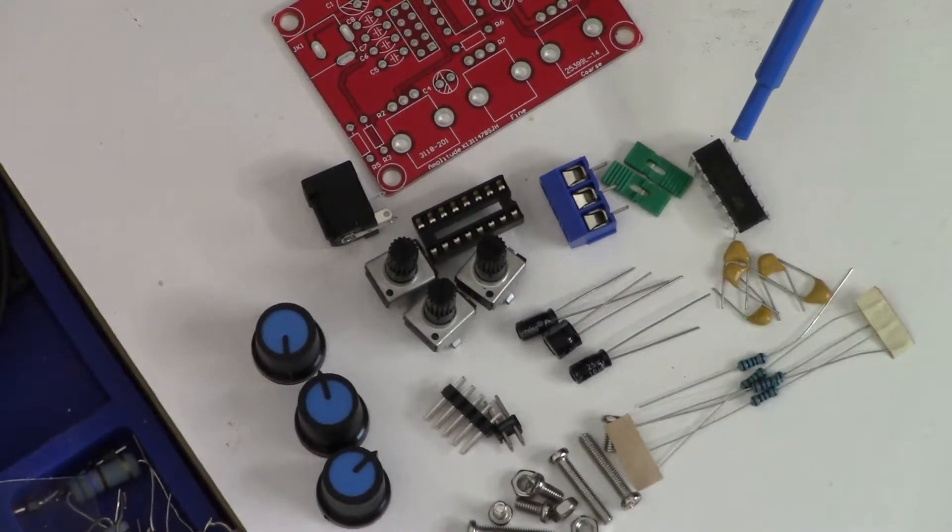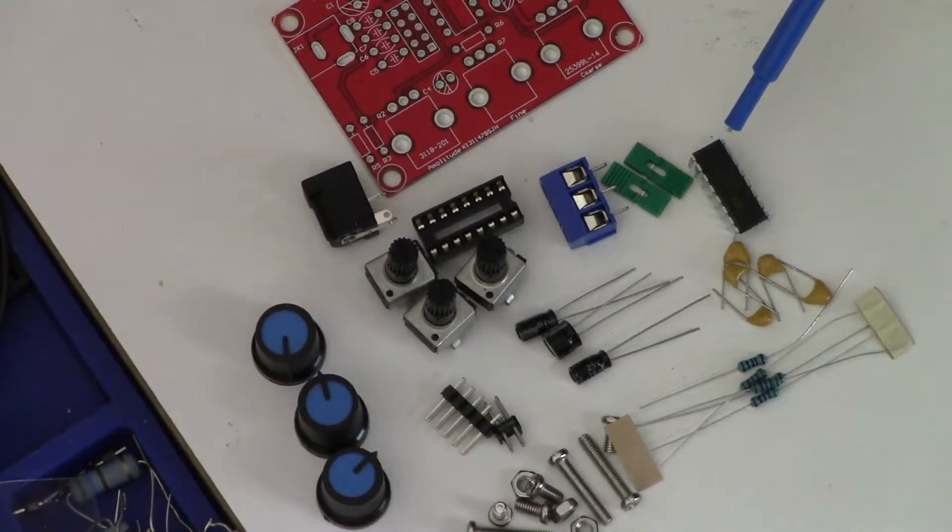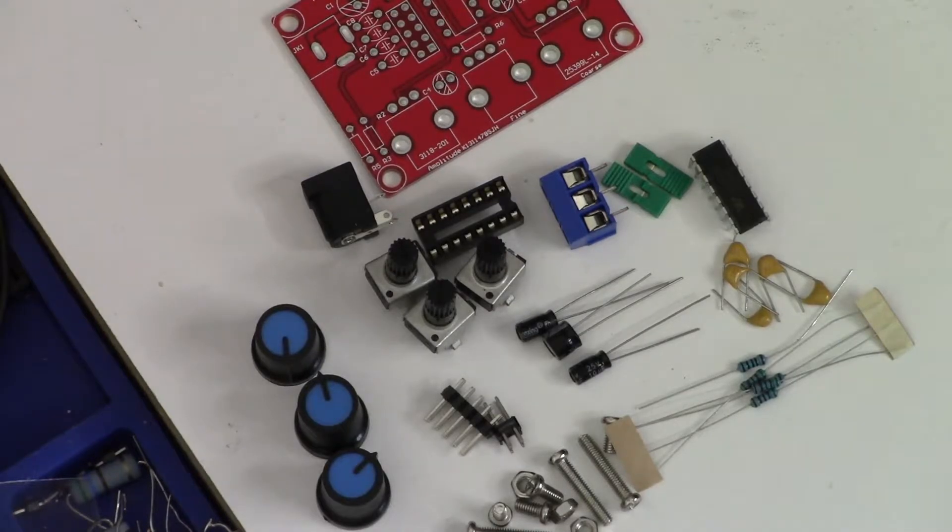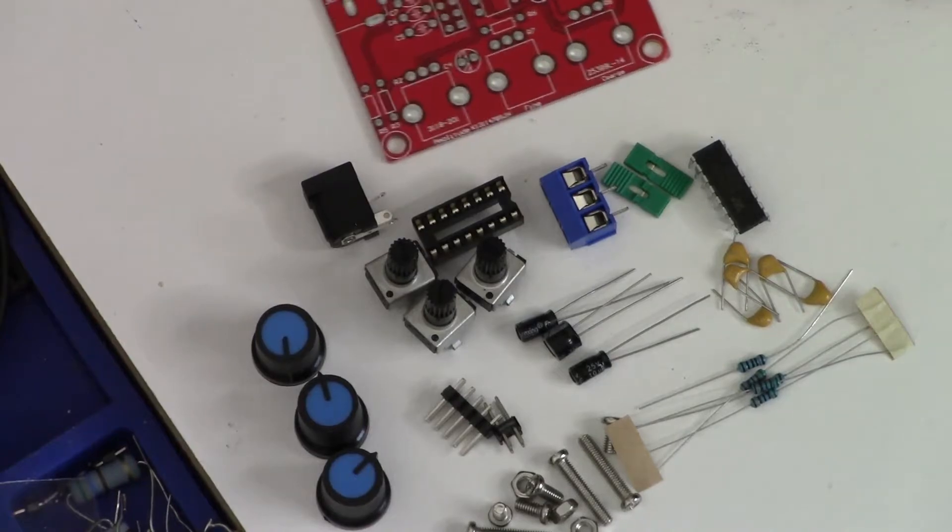That is, upon closer inspection, a 2206 CP, which through looking up on Google, it is a monolithic function generator IC capable of producing high quality sine, square, triangle, ramp, and pulse waveforms with high stability and accuracy. It works over a range of 0.01 Hertz to more than one megahertz. So this looks like a promising little kit. So why don't I get to soldering.